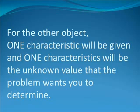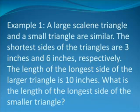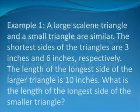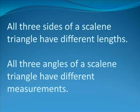Example number one: a large scalene triangle and a small triangle are similar. The shortest sides of the triangles are three inches and six inches, respectively. The length of the longest side of the larger triangle is 10 inches. What is the length of the longest side of the smaller triangle? You should remember that scalene triangles have three sides, each having three different lengths, and also three internal angles, each having three different measurements.